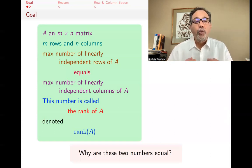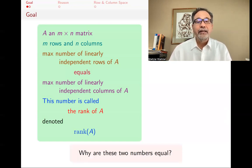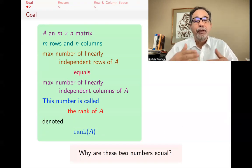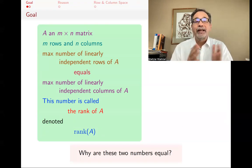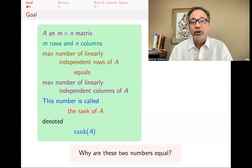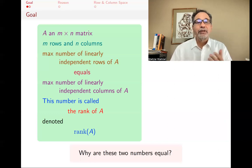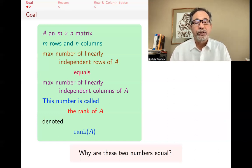So the question is: why are these two numbers equal? Why is it that if you find as many linearly independent rows as you can, and as many linearly independent columns as you can, you get the same answer? That's the purpose here.